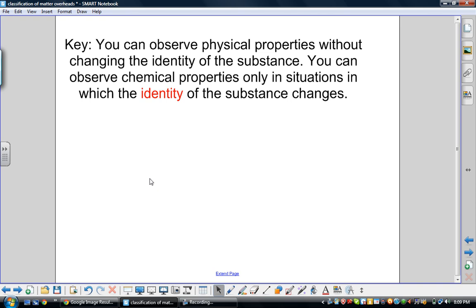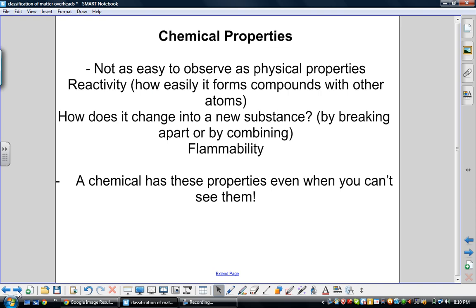A key to understanding physical properties is knowing that when you're observing them, you're not changing the identity of a substance. By observing a chemical property, you're putting yourself in a situation where you're changing the identity of the substance itself. There are two chemical properties: reactivity and flammability. If I set an object on fire to see if it's flammable, I'm changing the molecule. If I throw something in a vat of hydrochloric acid to see if it reacts, then I'm putting it in a situation where I might change its molecular identity.